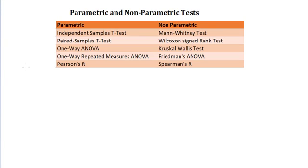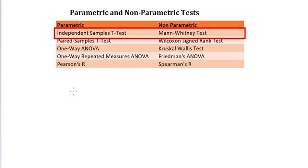For example, if you have parametric data from two independent groups, you can run a two-sample t-test to compare means. Or for non-parametric data, you can run a Mann-Whitney test instead.